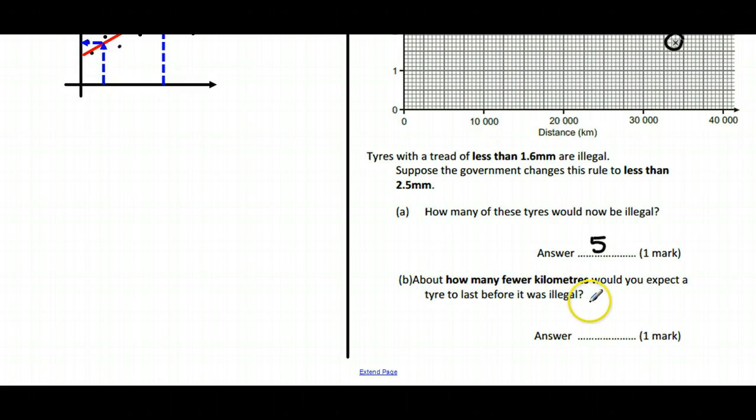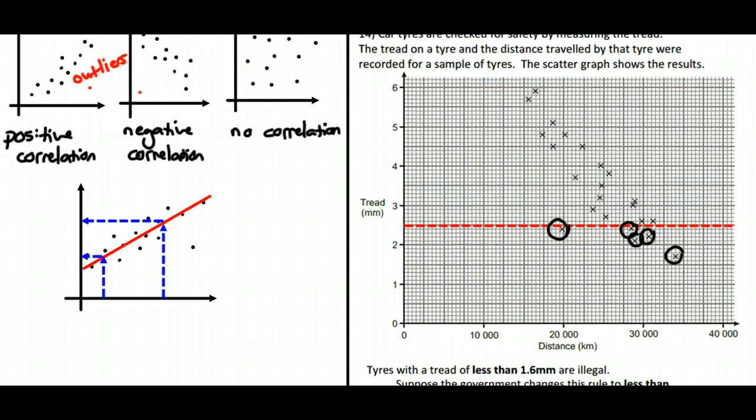We're going to have a look at part B: About how many fewer kilometres would you expect a tyre to last before it was illegal? Well, let's have a look at our trend line or line of best fit.